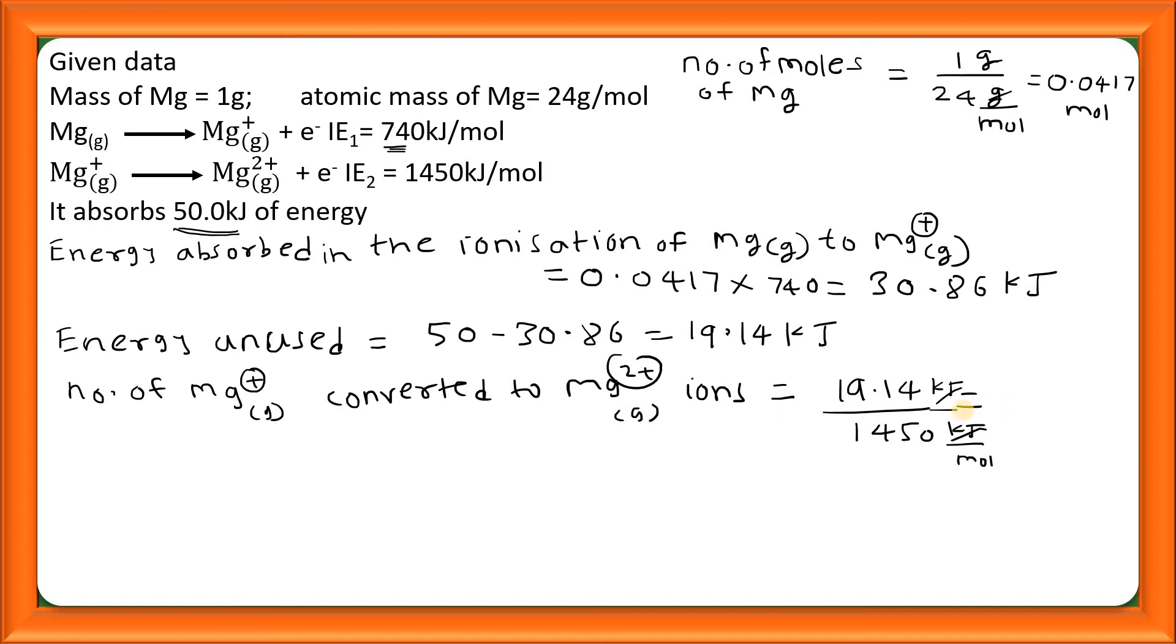So हमारे पास total 0.0417 Mg⁺ ions थे, उसमें से 0.0132 convert होगा Mg²⁺ में. So number of Mg⁺ ions left, we can write Mg⁺ ions left is equal to 0.0417 minus 0.0132, so it comes out to be 0.0285 moles.